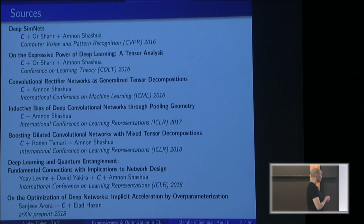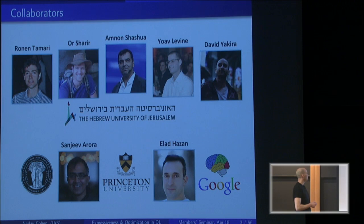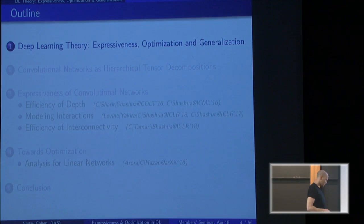This talk is going to be based on a pretty long series of papers from the last three years, most of which were done at the Hebrew University with my group: Amnon Shashua, doctoral students Ur Sharir and Yoav Levin, master students Honen Tamari and David Yakira. These are the works on expressiveness. The last work I'll cover on optimization was done here with Sanjeev and Elad.